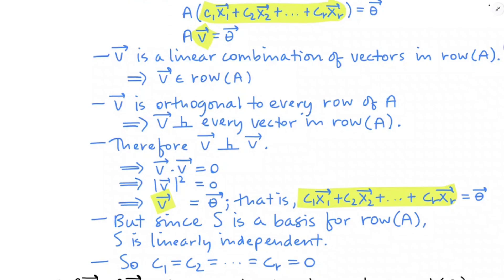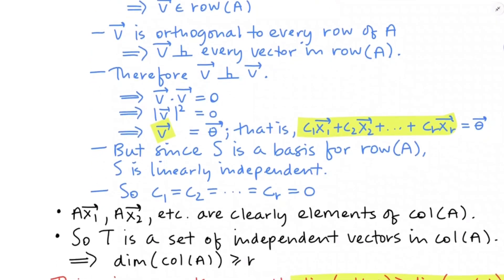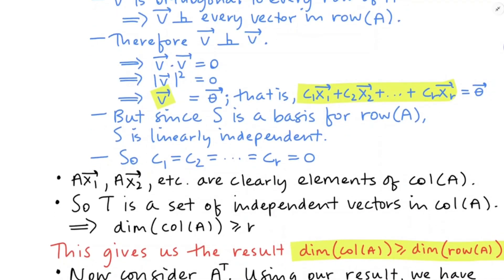Beyond that, I've also got the fact that AX1, AX2, AX3, all the way up through AXR are clearly elements of the column space of A. That's because A is on the left and I'm multiplying A times these vectors — these are all linear combinations of the columns. AX1 is a linear combination of the columns of A, AX2 is a different linear combination of the columns of A. So these vectors that we're getting back are elements of the column space; they are linear combinations of the columns. That means T is a set of independent vectors in the column space of A.